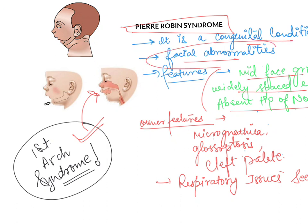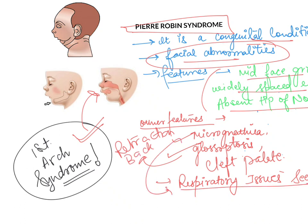The condition is seen from birth and the main features are facial abnormalities, which can include microgonathia or macrogonathia. Another feature is glossoptosis, which is the retraction of the tongue — the tongue falls backwards. Because of this there can also be respiratory issues in the child, and cleft palate is another common condition seen in this syndrome.